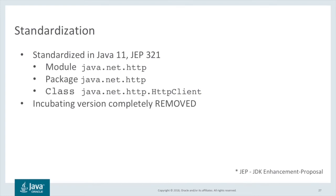Any code that runs on JDK 9 or JDK 10 and uses the incubating API will need to be updated. At the very minimum, the import statements will need to be changed to reflect the new package name, and also any module-info source files that contain requires directives naming the HTTP client incubator module will now need to use the new standard module name. Similarly, any command line options specifying the incubating module name will need to be updated, or may not even be necessary, since all standard modules that are part of the Java SE platform are resolved by default when running an application from the class path.